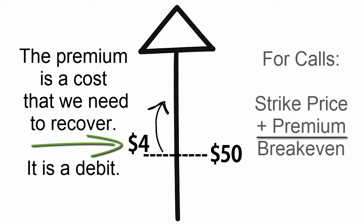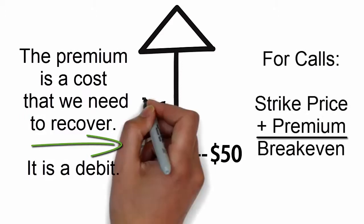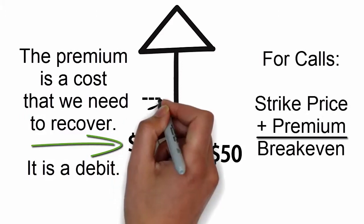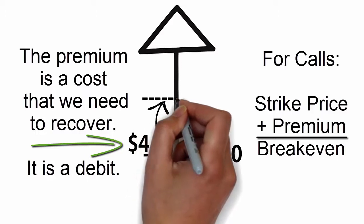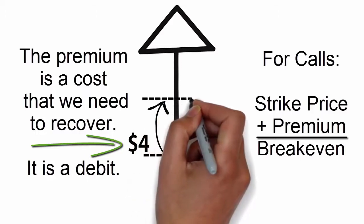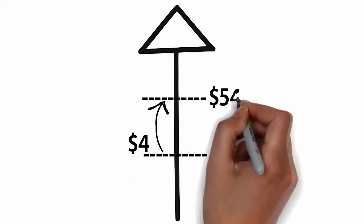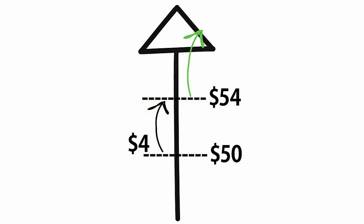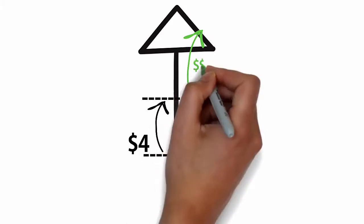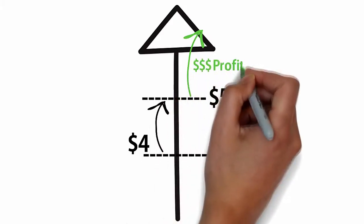Because of that, you take your strike price and you add the premium to it, which results in a price of $54 per share. In other words, the stock price needs to go up to $54 for you to break even. Once the stock price trades above $54, then the trade will be profitable.